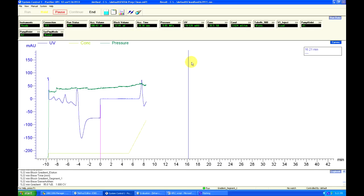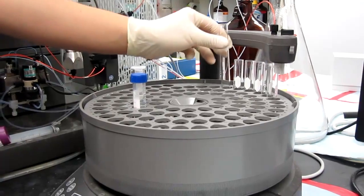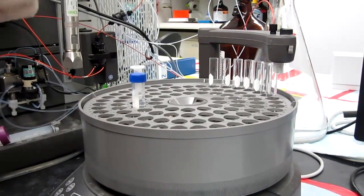Now we are nearing the part of the run where our sample elutes, and we want to collect the peaks. Make sure there are enough test tubes for the amount of fractions that you are going to collect.